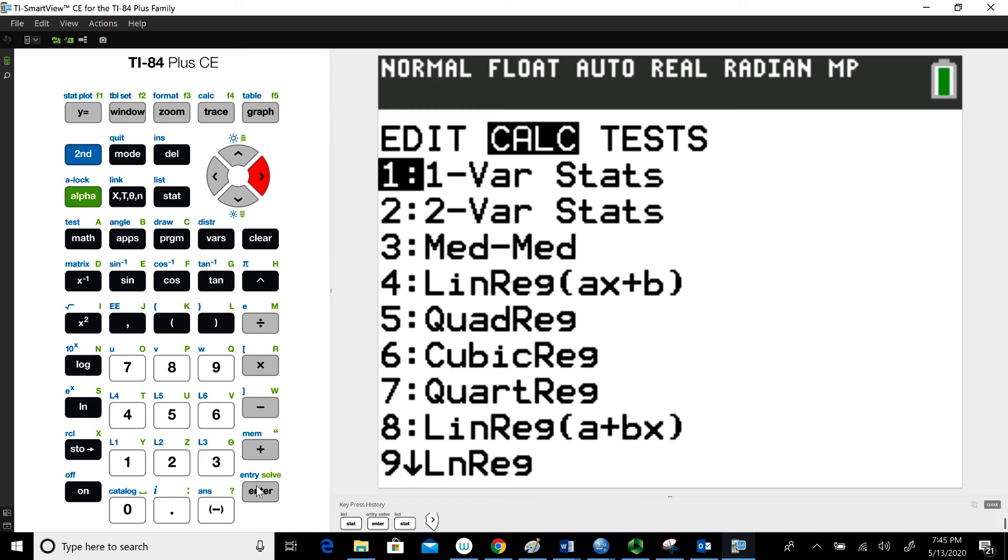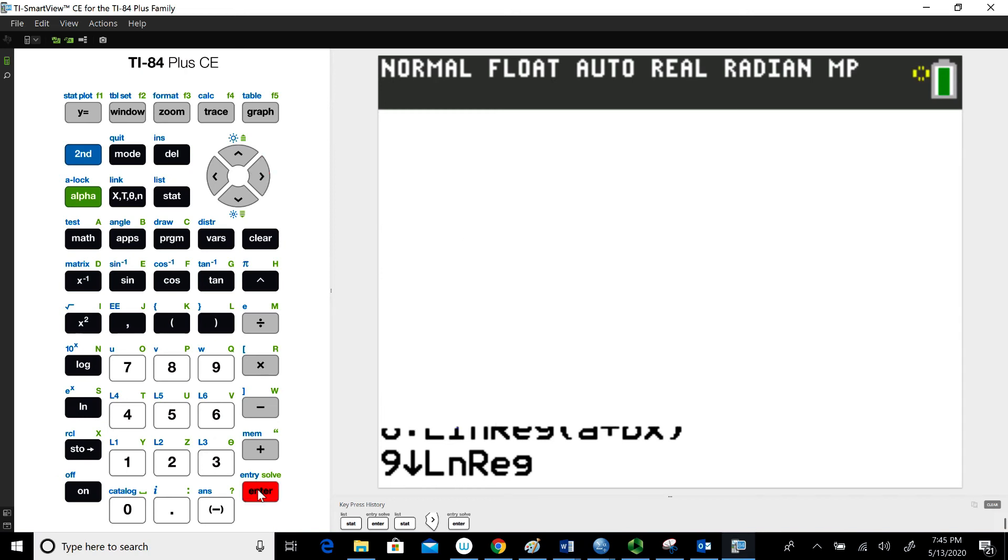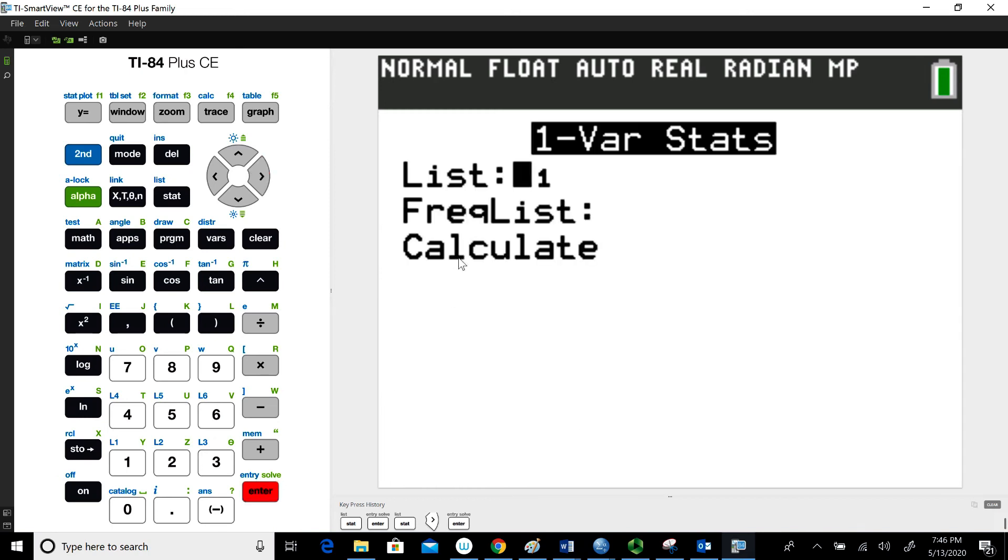Notice the one is highlighted, by the way. You could also hit the number one and it'll select that. Since I have a newer TI-84 calculator or emulator, it has this dialog box where it says list one, and you have to choose the list you're using. If you have an older calculator, it might say one var stats across the top of your screen, and you would just hit enter and it would automatically choose list one.